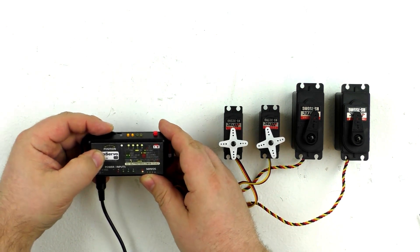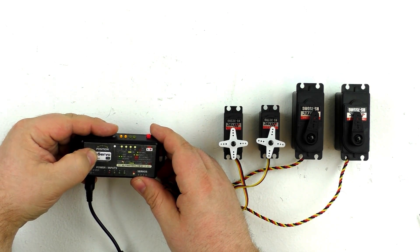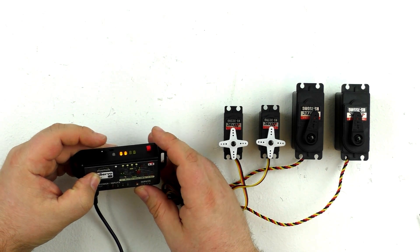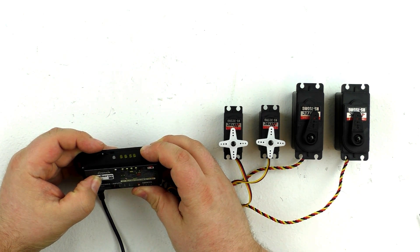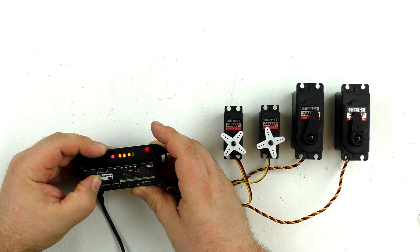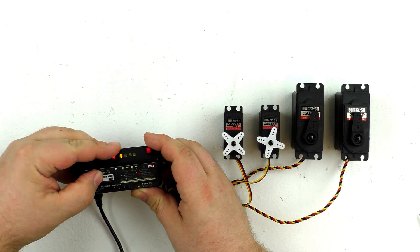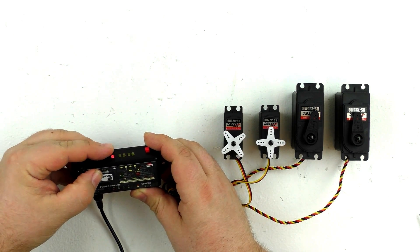Now you can see we're controlling servo number two. We'll center that one. Go ahead and hold down record until the LED starts blinking red. Let it go, and now we can program our second servo. You see the first servo was playing what we recorded earlier.